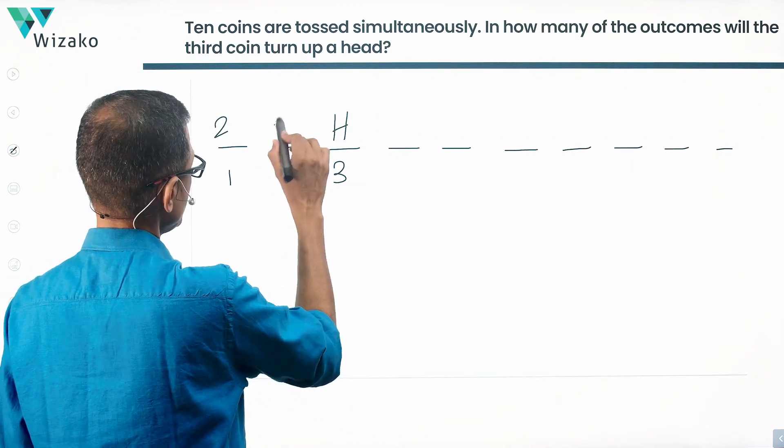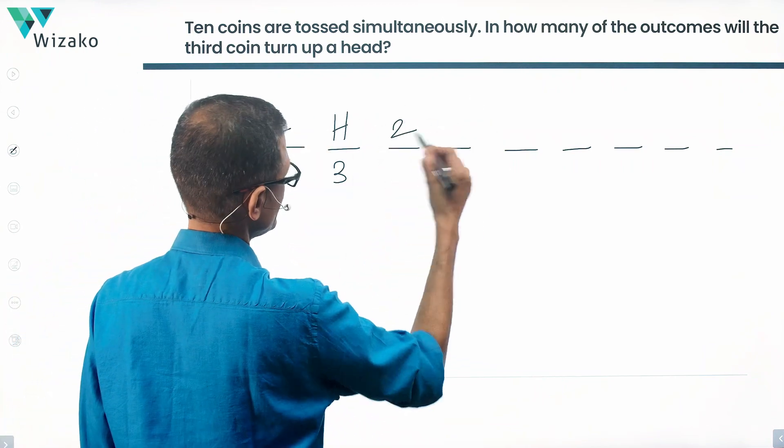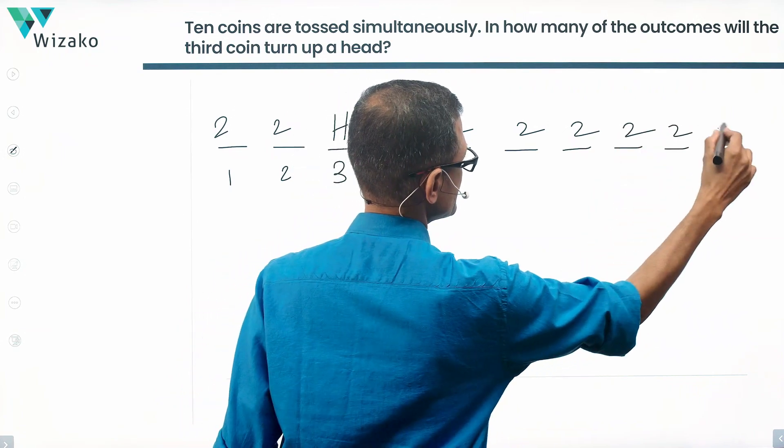Second one also, it could be a head or a tail. Third head or fourth head or tail. Fifth, sixth, seventh, eighth, ninth, tenth.